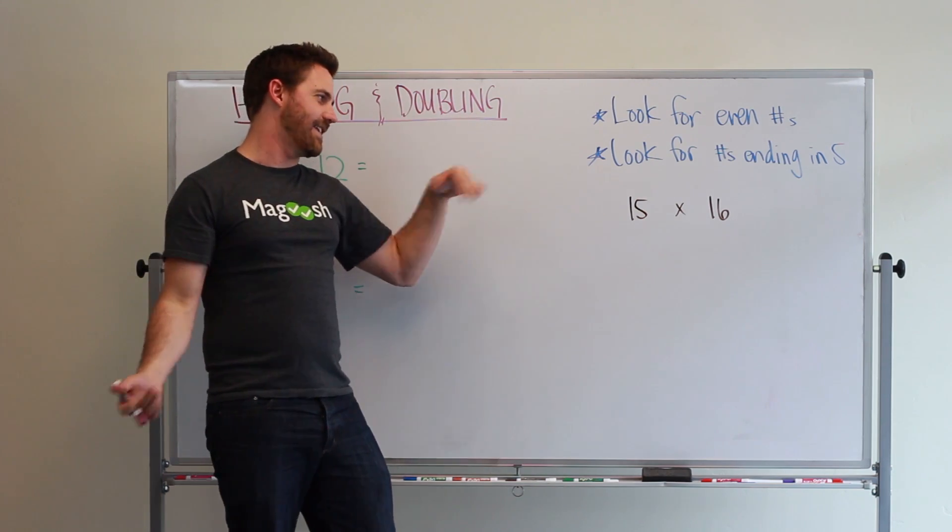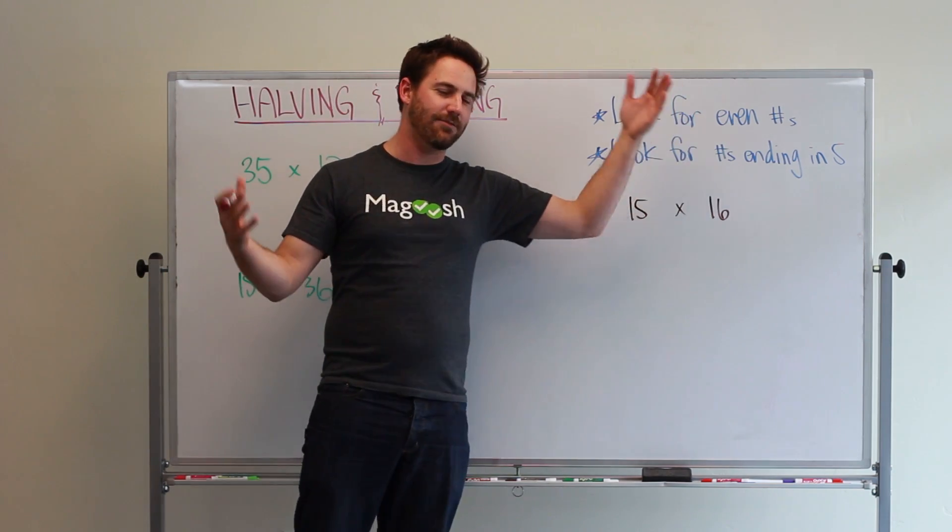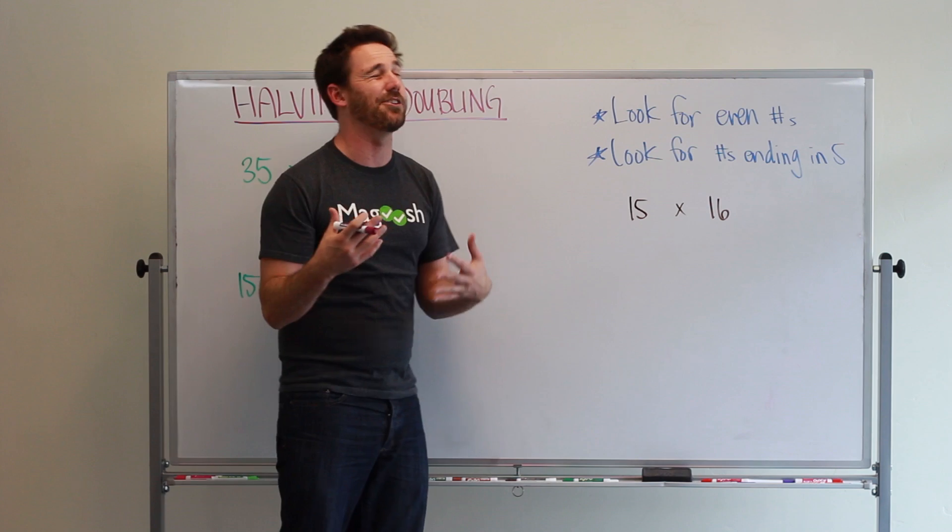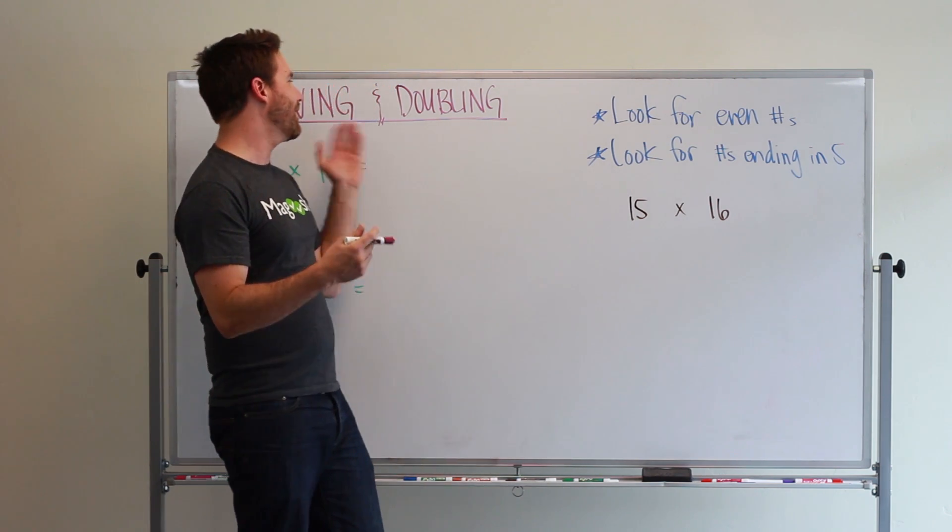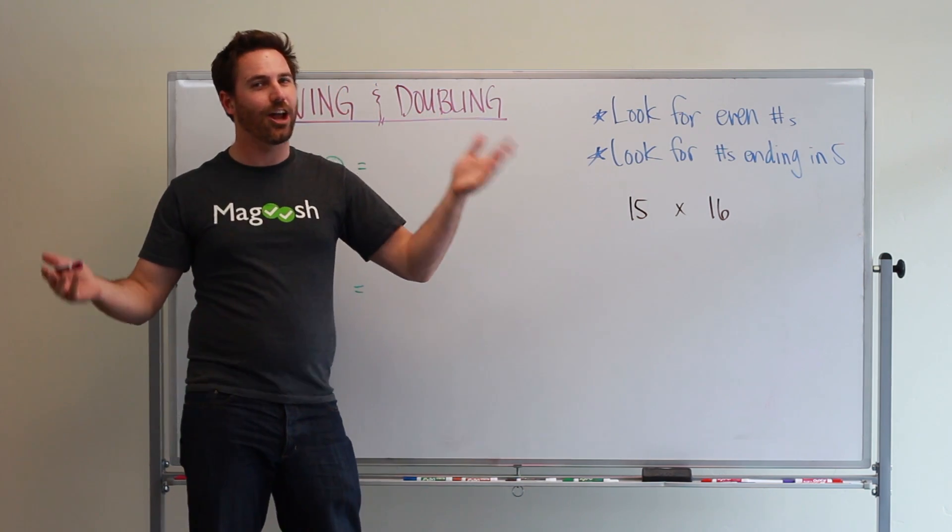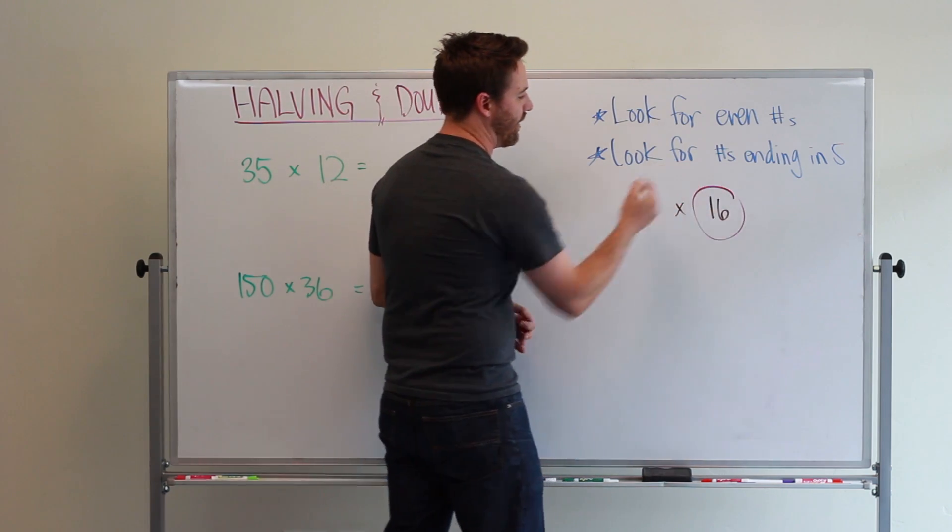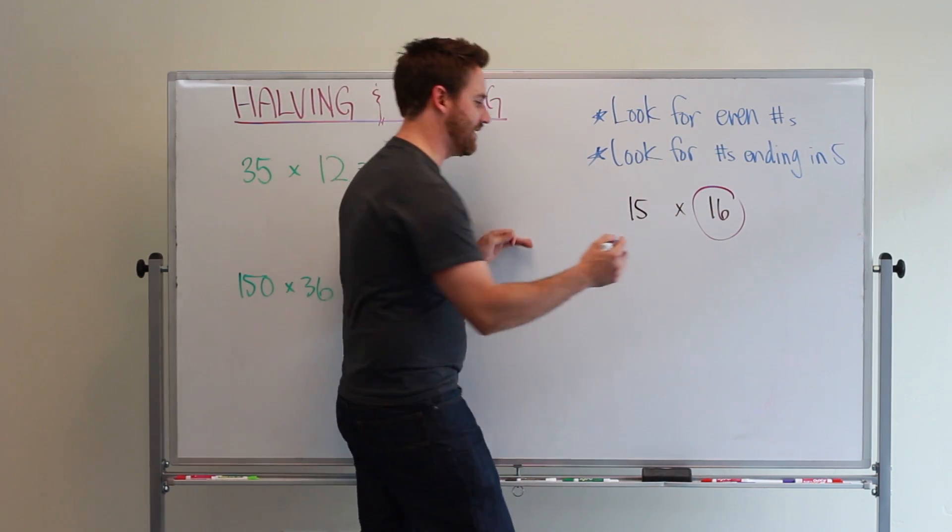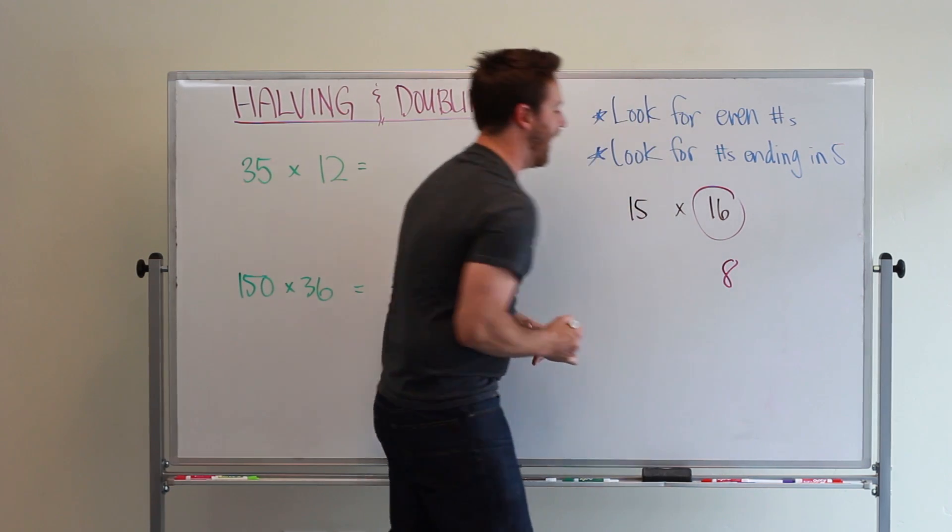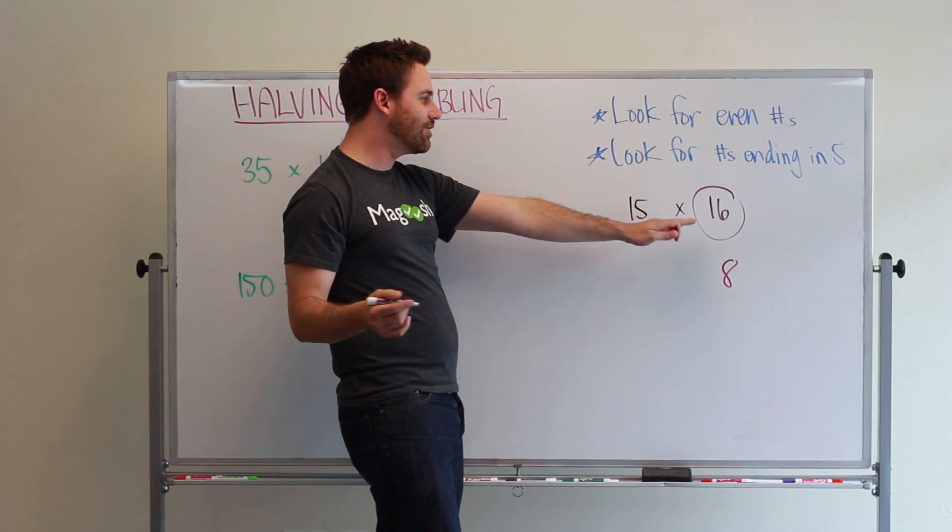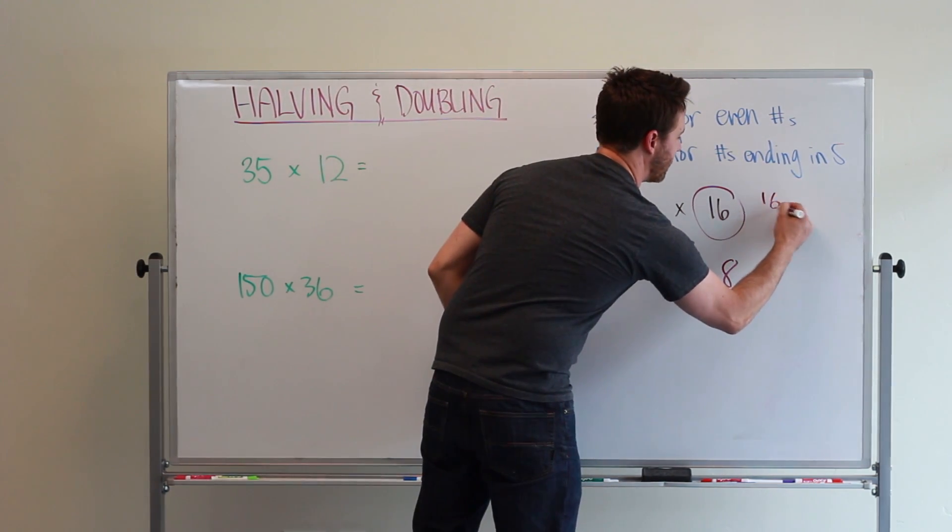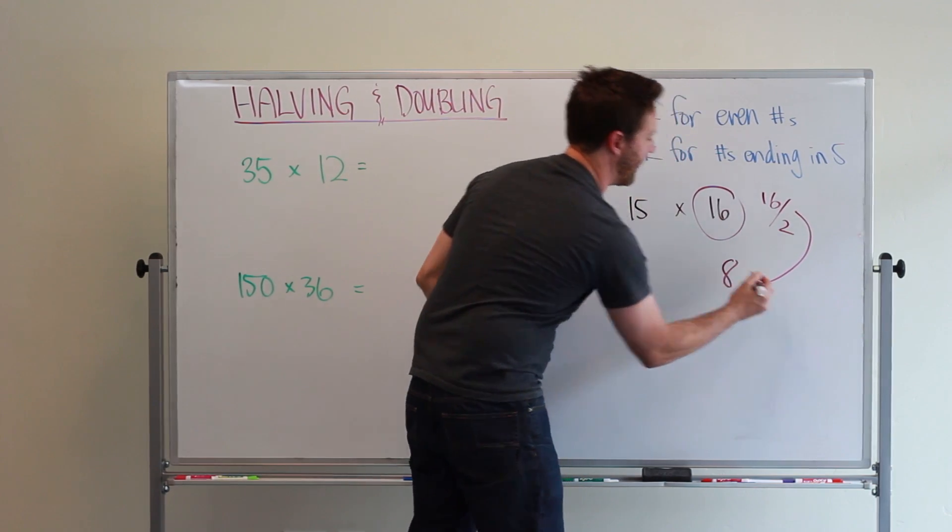I have an example here of 15 times 16, which normally would be pretty tough to compute in your head, but with the halving and doubling rule, not hard at all. Basically, you have your even numbers. Here we have 16—half of 16 is 8. I divided 16 by 2 and I get 8.